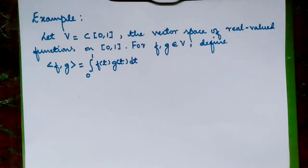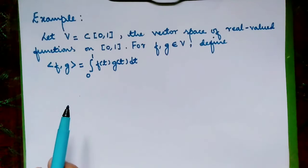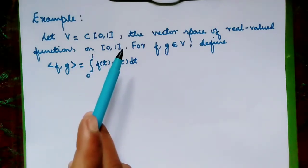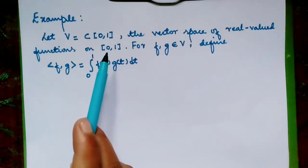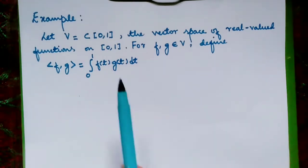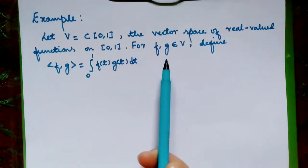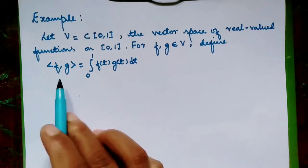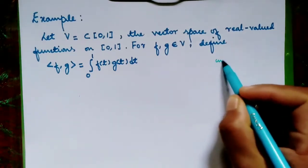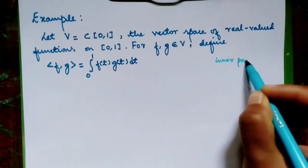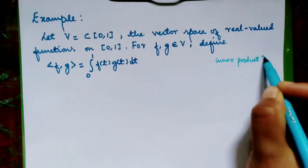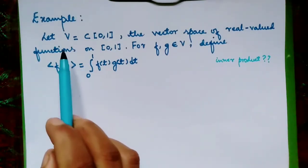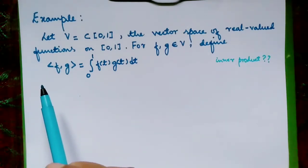In this video I'm going to explain this inner product space example. Let V be the vector space of real-valued functions on the interval [0,1]. From V we take two functions f and g, defined in a specific way. Our aim is to check whether this defines an inner product. If it is an inner product, then this vector space equipped with it is an inner product space.